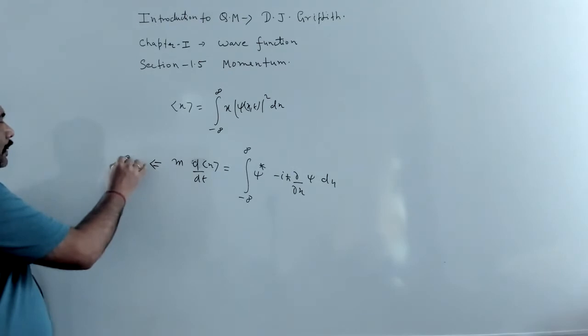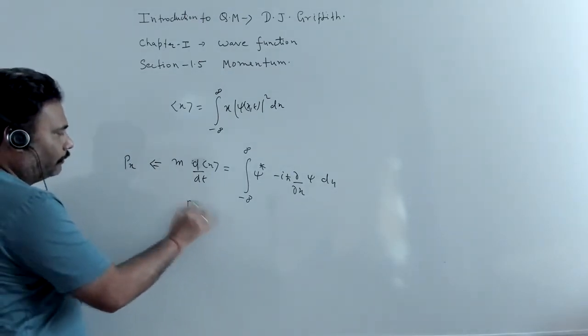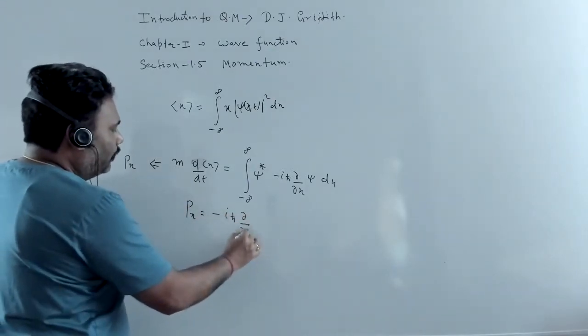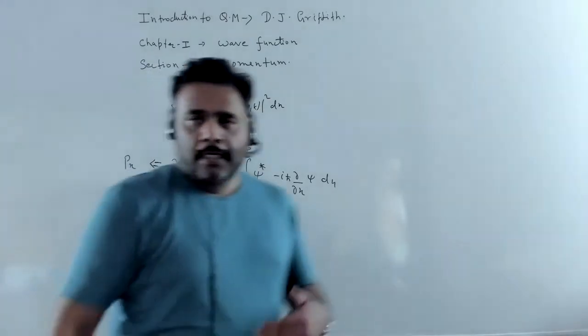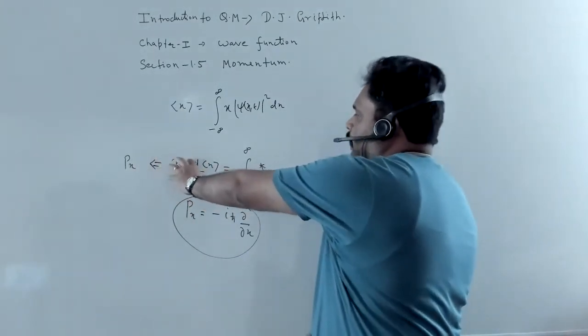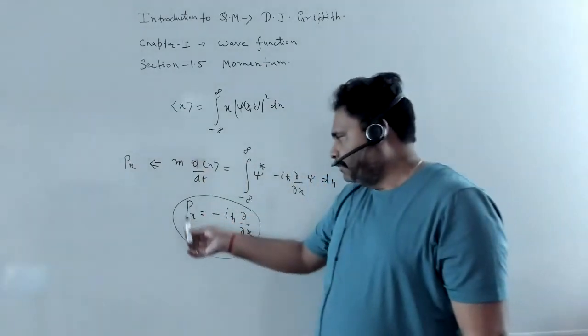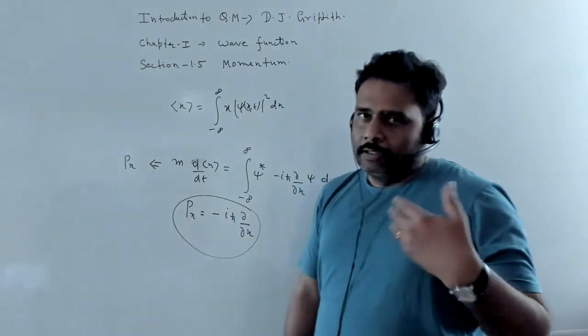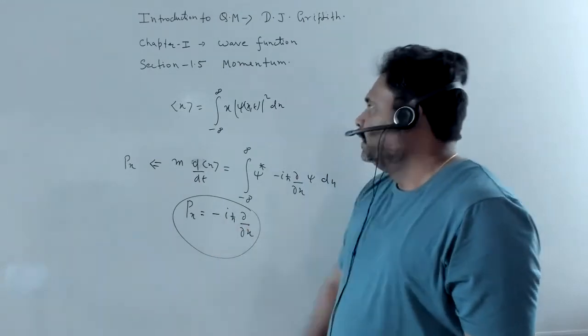This is nothing but the classical momentum. And from here, we can have classical momentum px can be defined as minus ih bar del upon del x. So this is nothing but the momentum operator. In this book, you can just go through all the section and the derivation is wonderful and you can do it with yourself. But we have to use this particular concept of momentum. So the momentum operator can be defined as minus ih bar del upon del x.